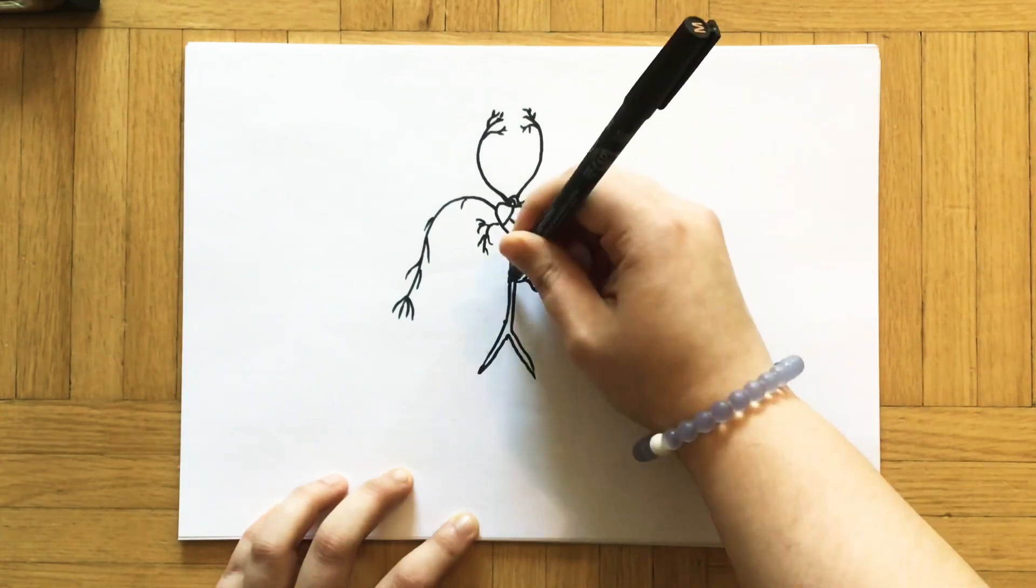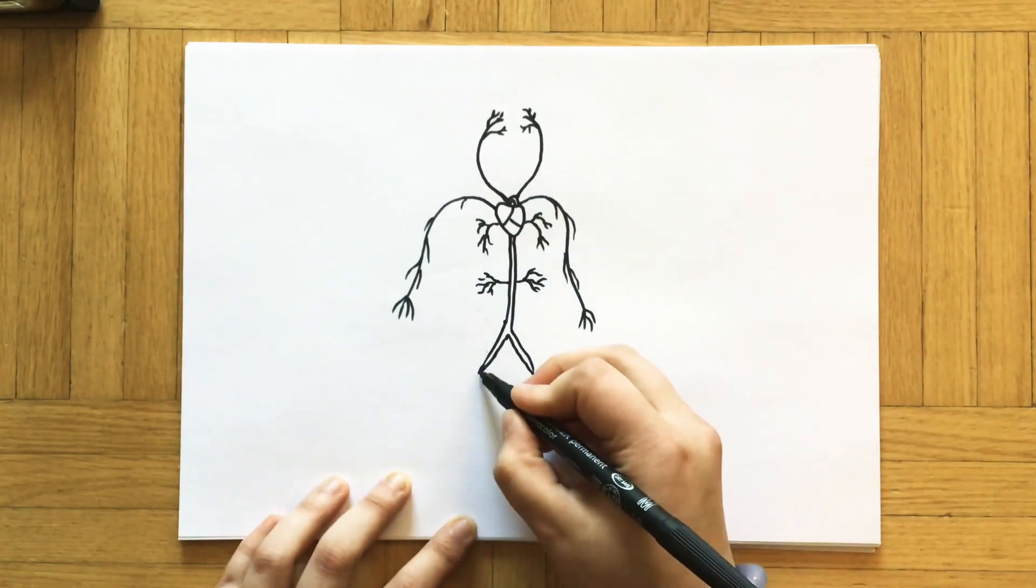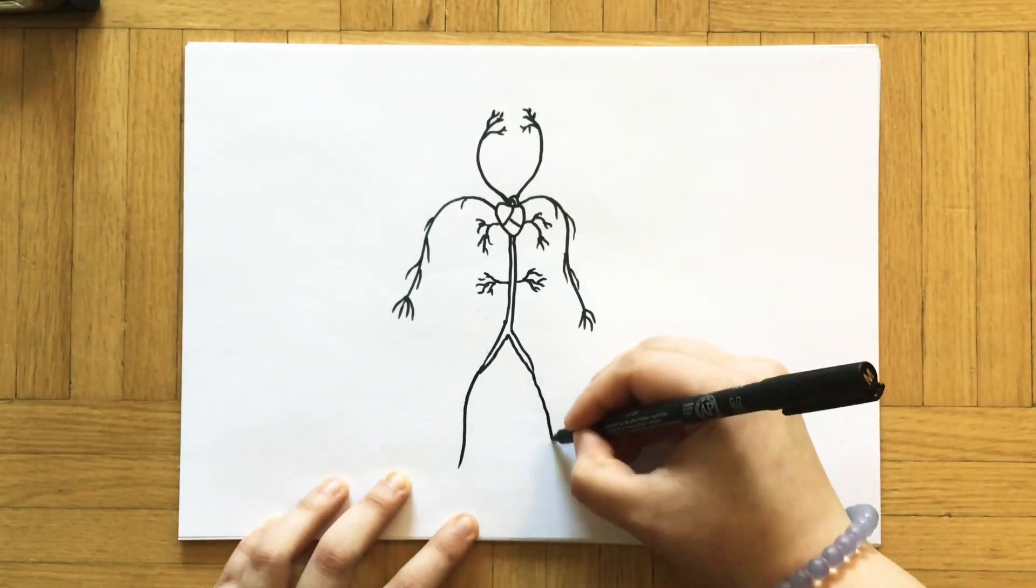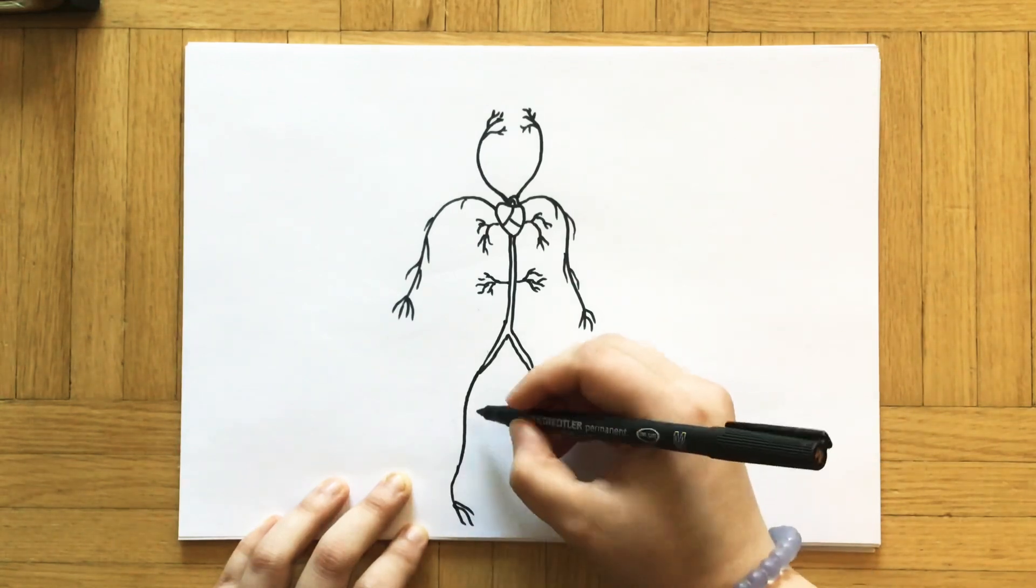When oxygen gets into your blood from the alveoli, the heart pumps the blood with oxygen all over your body. That's very important.